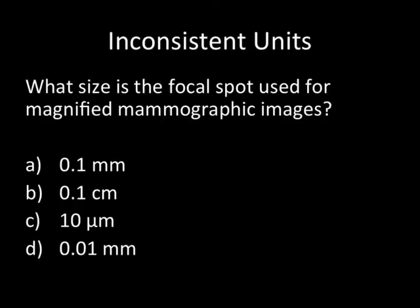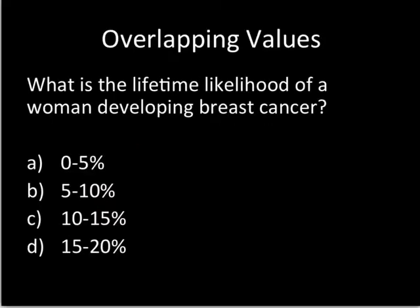Let me run through a few common mistakes I see from extensive exam item editing. Don't use inconsistent units — avoid mixing millimeters, centimeters, and micrometers across answer options. Use the same units for all answers, and list them in numerically increasing order. Also, don't let numerical value ranges overlap. If a learner thinks the answer is 5%, they shouldn't have to choose between two overlapping ranges. Use non-overlapping intervals such as 0–5%, 6–10%, 11–15%, and so on.